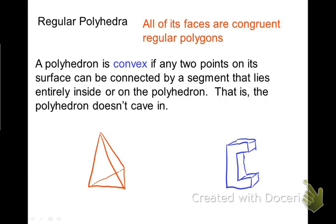We say that a polyhedron is convex if any of the two points on the surface cannot be connected. So the one on the left is a convex polyhedron, and the one on the right is a non-convex or concave. You can see the difference between the convex and the non-convex.